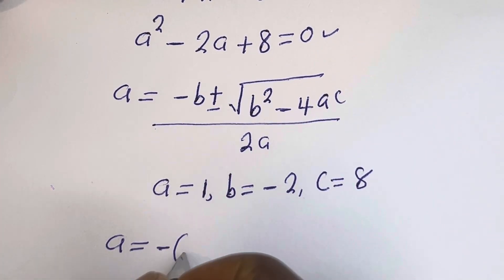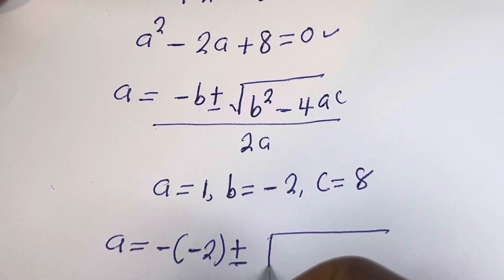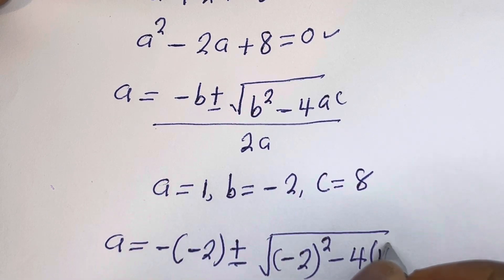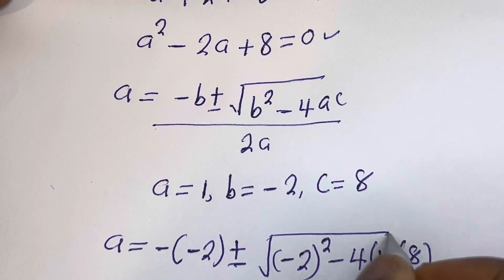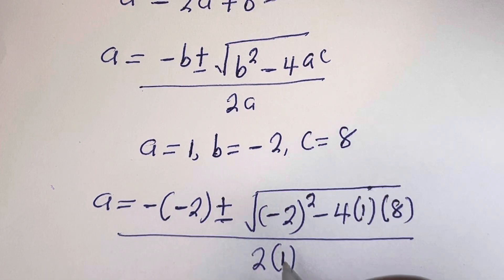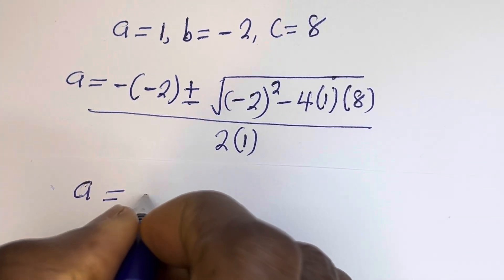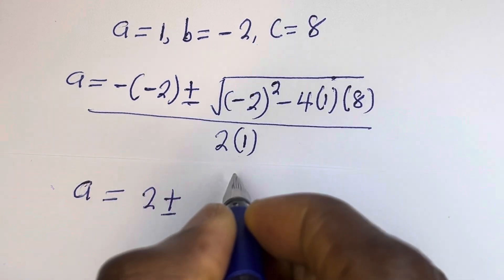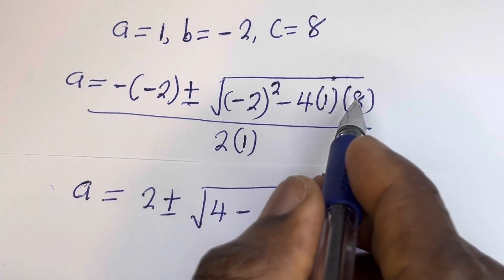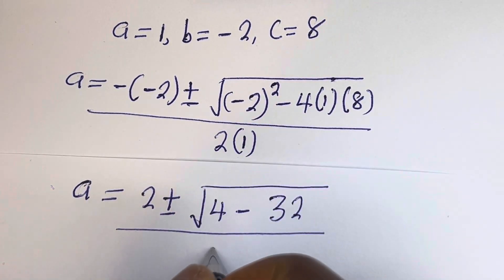Applying the quadratic formula: a is equal to minus b plus or minus square root of b squared minus 4ac, all over 2a. Substituting: 2 plus or minus square root of minus 2 squared — that is 4 — minus 4 multiplied by 1 multiplied by 8 — that is 32 — all divided by 2 multiplied by 1, that is 2.